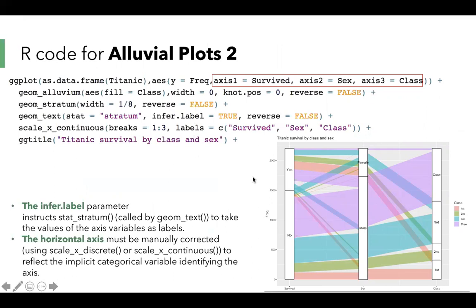If we don't want the annotation, add geom_stratum and set the fill equal to false. If we want to turn the diagram, we can use coord_flip.